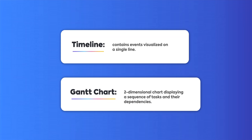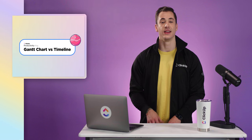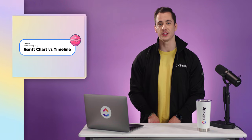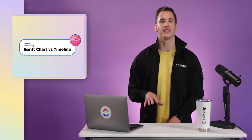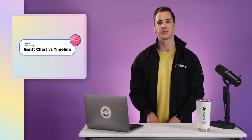The main difference between a timeline and a Gantt chart is that a timeline contains events visualized on a single line, while a Gantt chart, on the other hand, is a two-dimensional chart displaying a sequence of tasks and their dependencies. In this video, we're going to cover what a Gantt chart and timeline are, and show you how these tools can improve your company's project management processes.